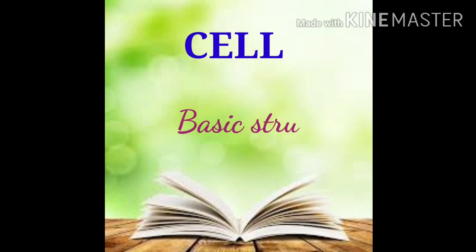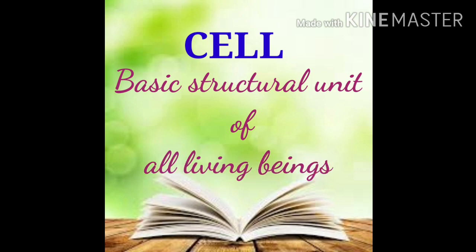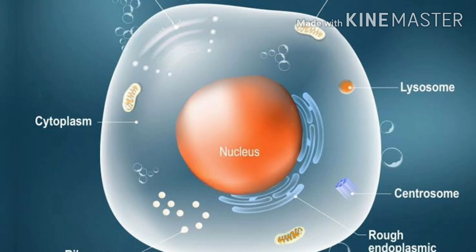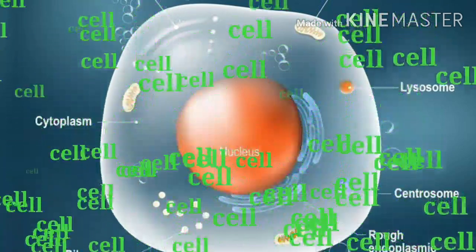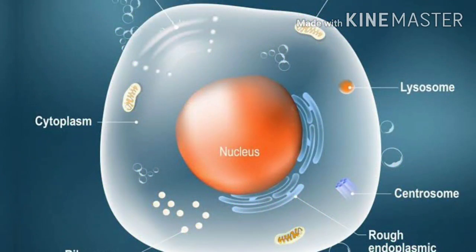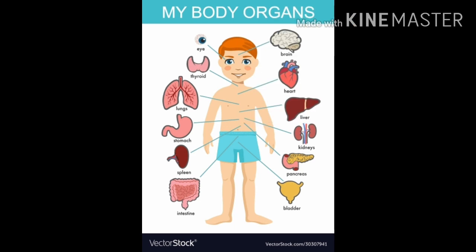Cell is the basic structural unit of living organisms. All organisms are made up of millions of cells. We learn the basic structures of the cell. All organs are different.